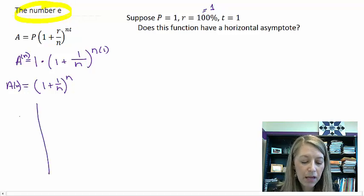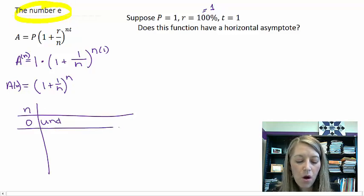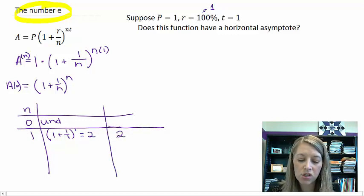So what's happening if my n value is zero? Well, I cannot plug in zero because that would give me something undefined. So that's no good. What happens if my n value is 1? That gives me 1 plus 1 over 1 to the first power. Or 1 plus 1, which is 2, 2 to the first power is 2. So the value that we get out here is 2 exactly.